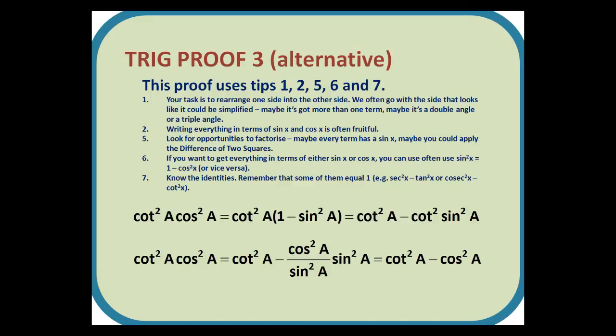Alternatively, we could start with the right hand side, the cot²a cos²a. If we replace cos²a with 1 - sin²a, we can multiply out the brackets, and that gives us cot²a - cot²a sin²a. Then we can replace the cot²a with cos²a/sin²a, and the sin²a's cancel out, and we have a final answer of cot²a - cos²a.